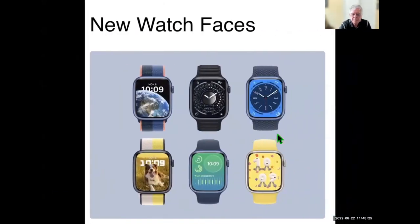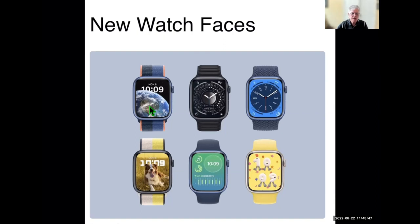You get several new watch faces. One of the most popular among bloggers is the astronomical watch face — there are several renditions. You can have a small or big Earth, positioned to your location so the Earth shows the part of the world where you are. You can also have the moon, a close or far shot of the moon, or our solar system. There are also newer faces including one for kids.